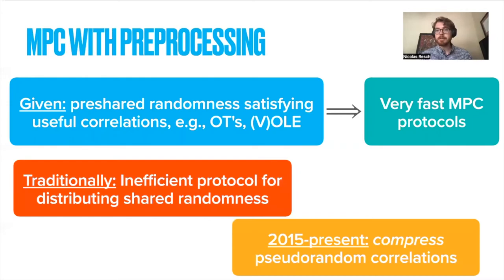In the last six or seven years, a new idea has emerged where instead of requiring full pre-shared randomness, we try to compress it in such a way that maybe after decompressing it, it's only pseudo-random, but then this compression of the required pseudo-randomness can be much more efficiently shared.